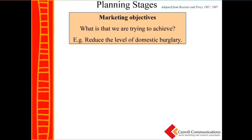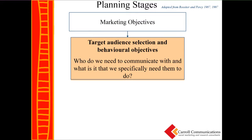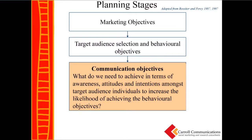Starting off, what is the marketing objective — what are we trying to achieve? Maybe it's to reduce the level of domestic burglary, for instance, in that UK example. We then need to decide who we need to communicate with or engage with through the range of interventions, and what specifically we need them to do. Social marketing is not about just raising awareness — it's focusing on a behaviour. What specific behaviour do we need this target audience to do more of, less of, or the same of in terms of the campaign objectives? Then what do we need to do in terms of awareness, attitudes, and intentions amongst this target audience to increase the likelihood of achieving that behavioural objective? Based on what we know about theory, what do we need to make them more aware of, what attitudes do we need to focus on, what intentions do we need to generate to increase the likelihood of achieving that behaviour change?